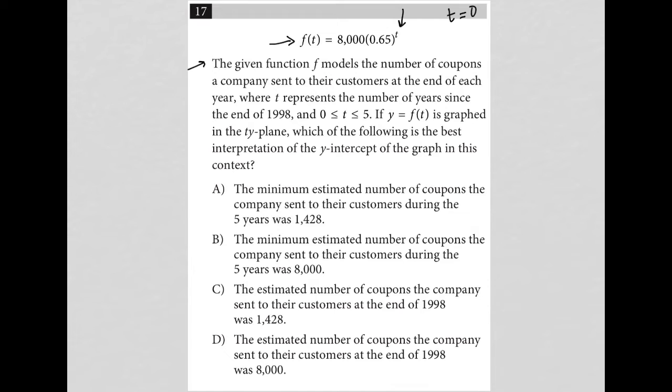So t equals 0 means we're at the beginning - we have not had an end of a first year. That means this company is sending out 8,000 coupons at the very start, and then they're going to multiply that by 0.65 the following year.